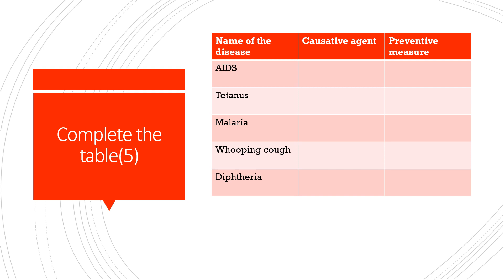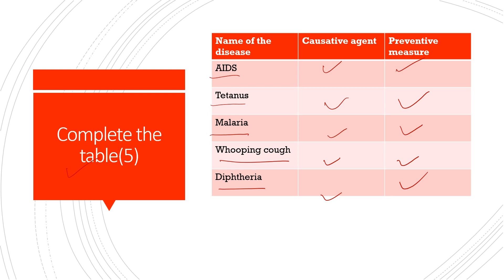Next, I have given you a table to complete. The names of the diseases are given: AIDS, tetanus, malaria, whooping cough, and diphtheria. You are supposed to write the causative agent and preventive measures for each. I discussed these diseases a few weeks back, so please go through that video — I will try to put the link in the description box.